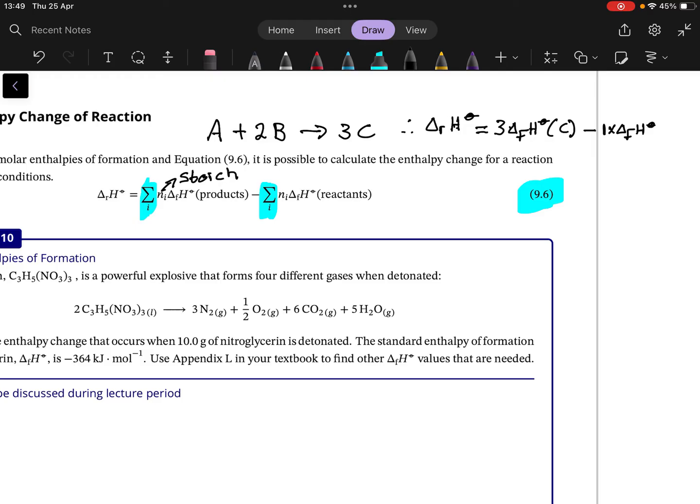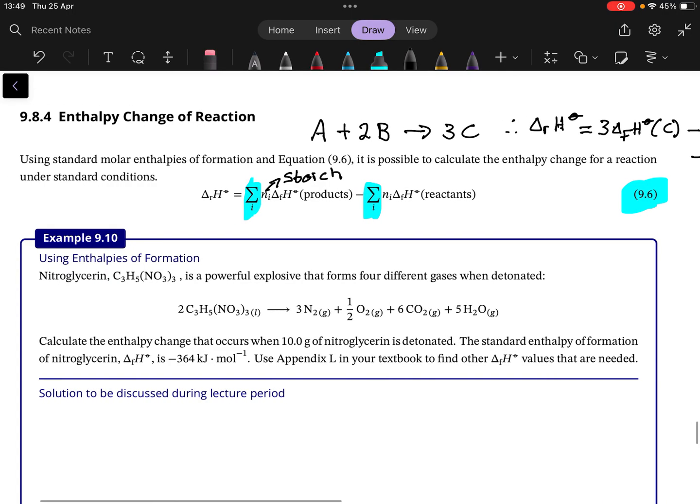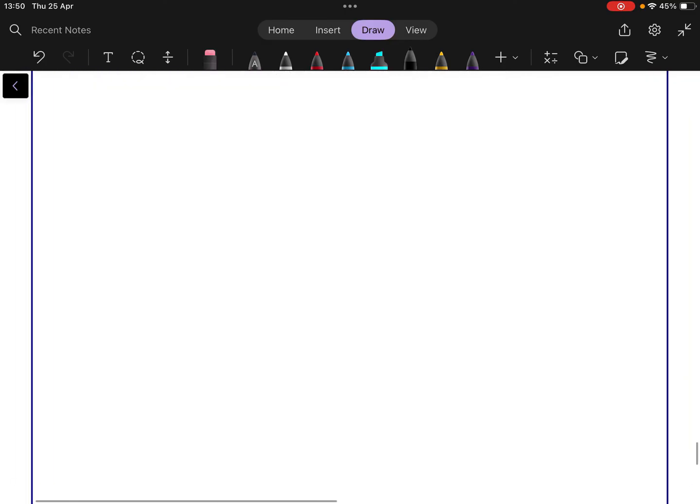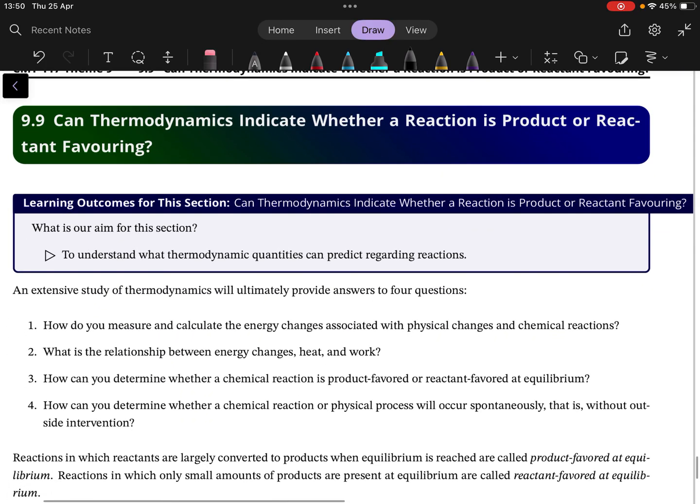Minus 2 times delta fH naught of B. Okay, so then we can calculate the enthalpy of reaction for it, granted or given these things. And like I said, you'd look up delta fH in a table or an appendix of a textbook or somewhere. All right, so we look at that example in class.